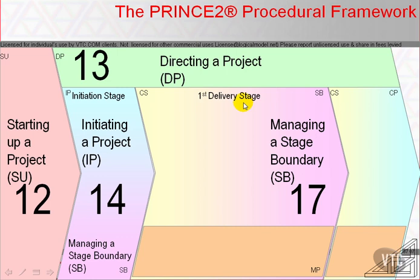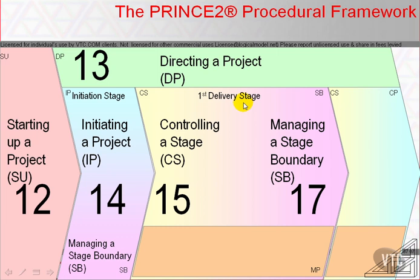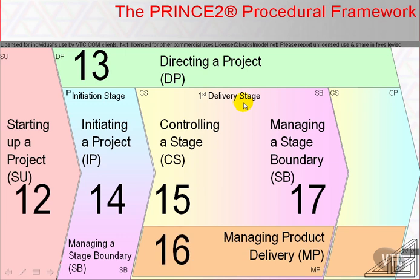So-called specialist delivery stages are named because they deliver the technical or specialist outputs of our subject matter expert team members. During a specialist delivery stage, the project manager follows the guidance of controlling a stage — chapter 15 in the official manual — which describes, amongst other things, how to delegate technical work packages to the specialists who create the project's products. These team members and team managers perform their discipline-specific activities such as welding, graphic design, bricklaying, or software testing, as well as three PRINCE2 activities within the managing product delivery process. The dialogue between the project manager and team members maintains control over the allocation of work and the reporting of achievement.